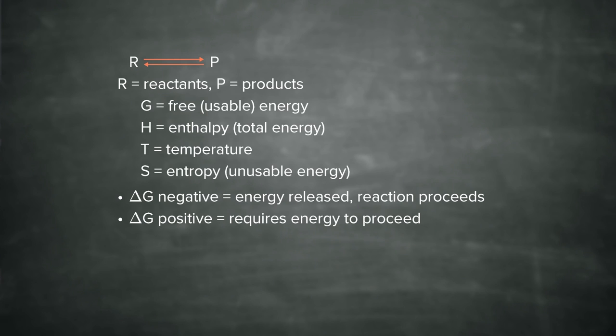And the third possibility is that delta G is zero. And if delta G is zero, the reaction is said to be at equilibrium, where the reactants become products at the same rate as the products go back and become reactants. So everything is kind of in balance. Those are your three possibilities.